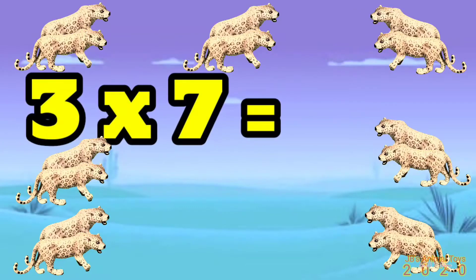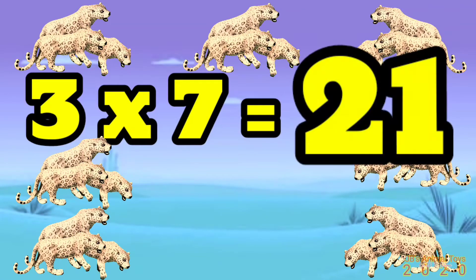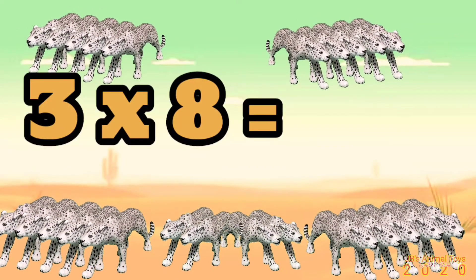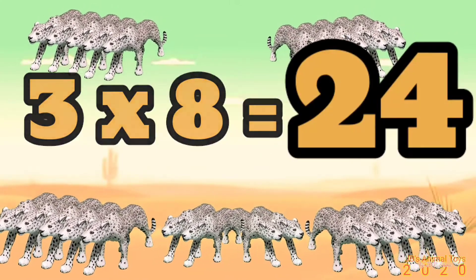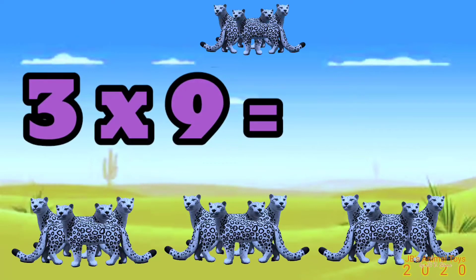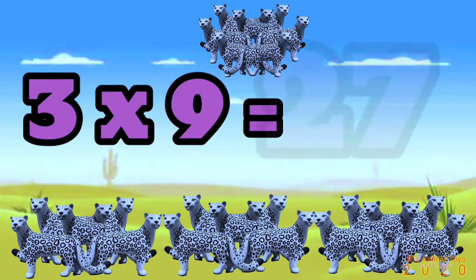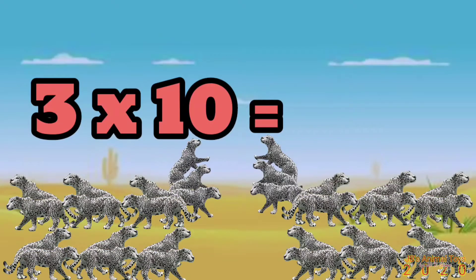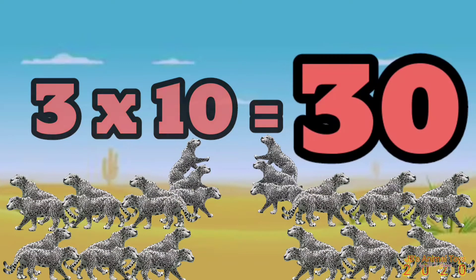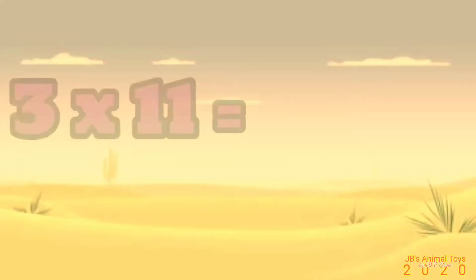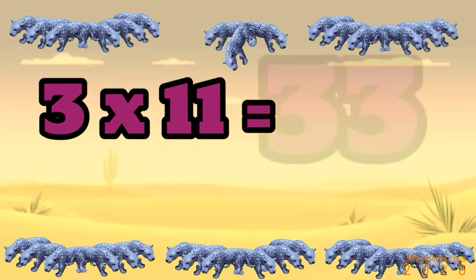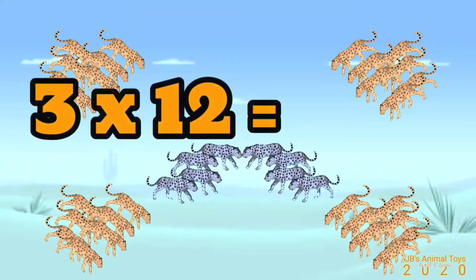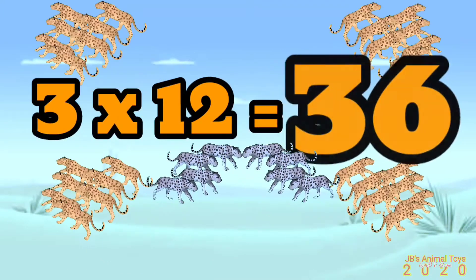3 times 7 is 21. 3 times 8 is 24. 3 times 9 is 27. 3 times 10 is 30. 3 times 11 is 33. 3 times 12 is 36.